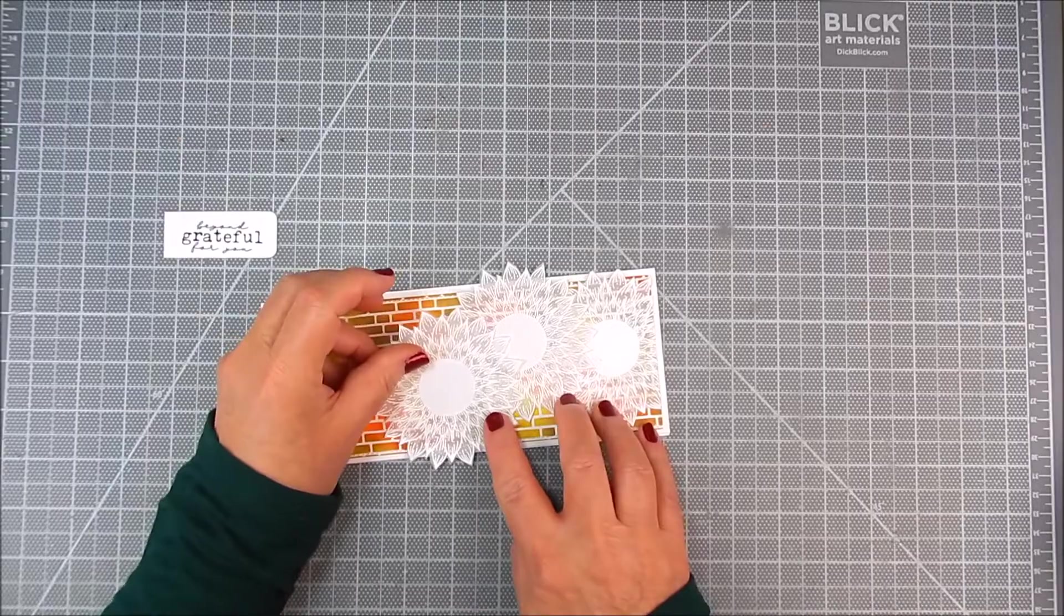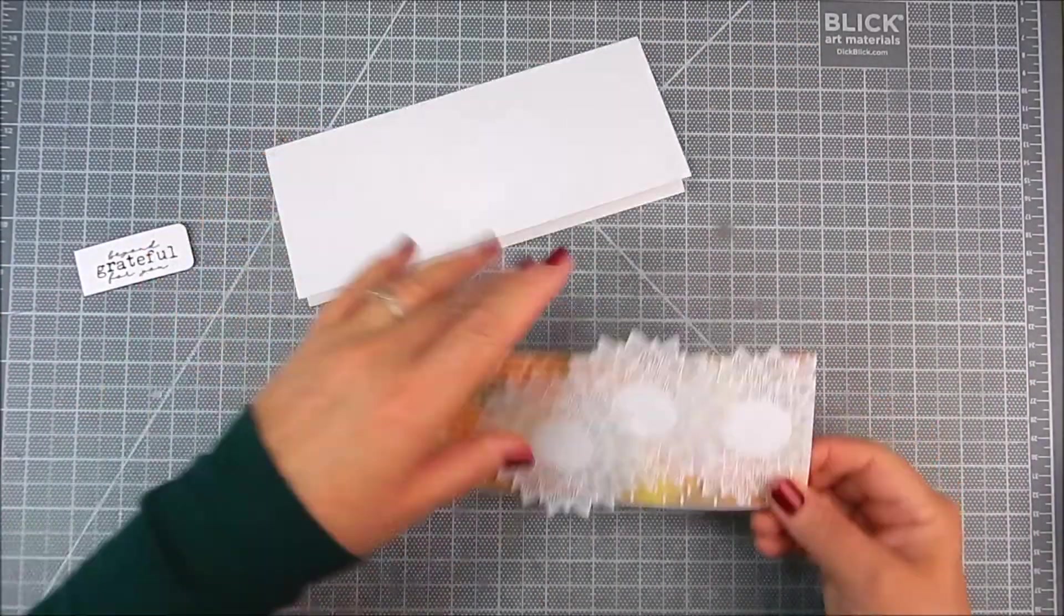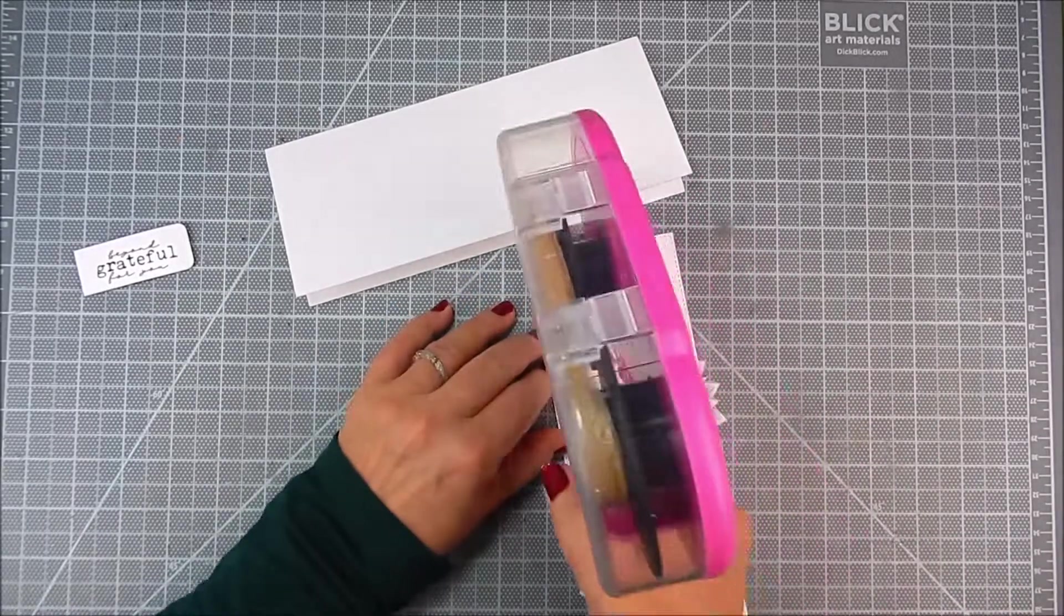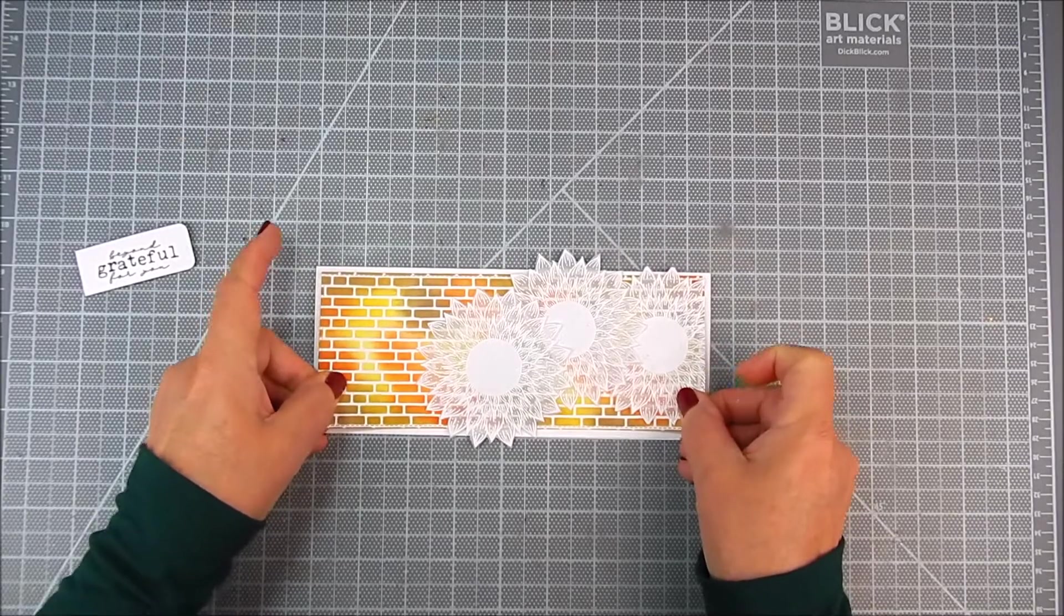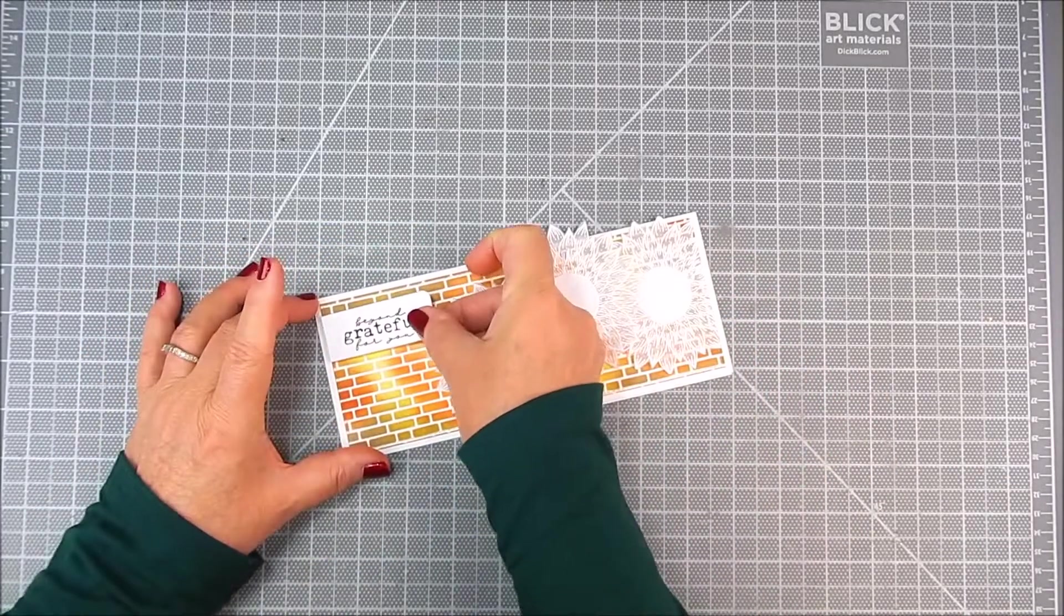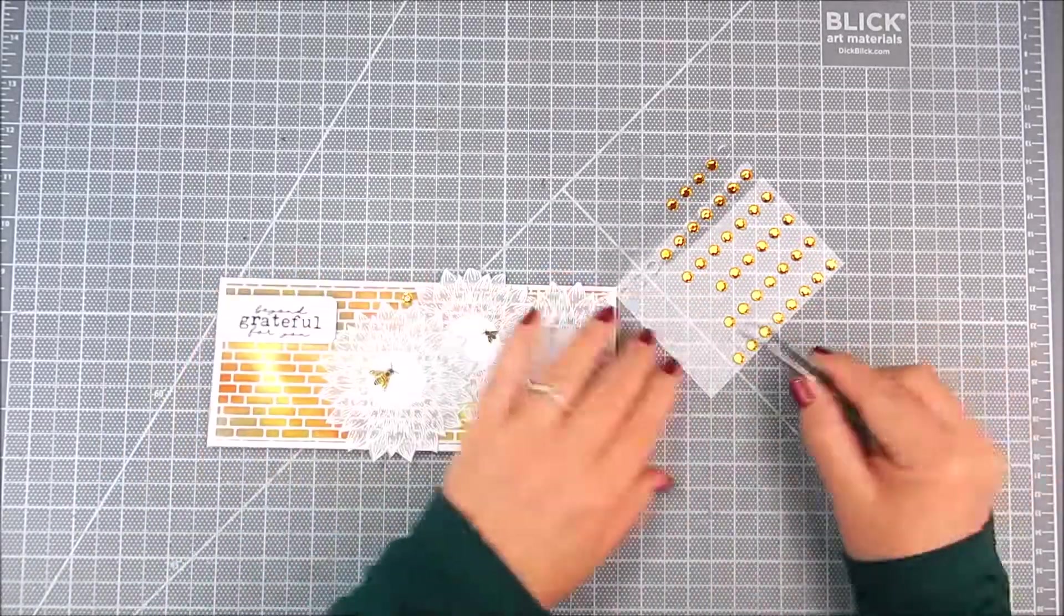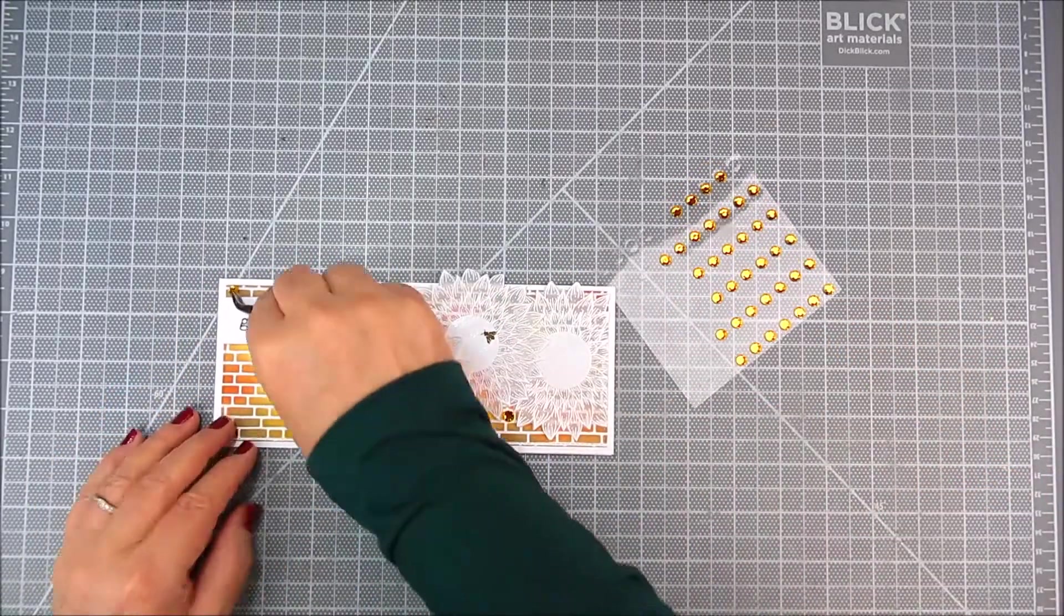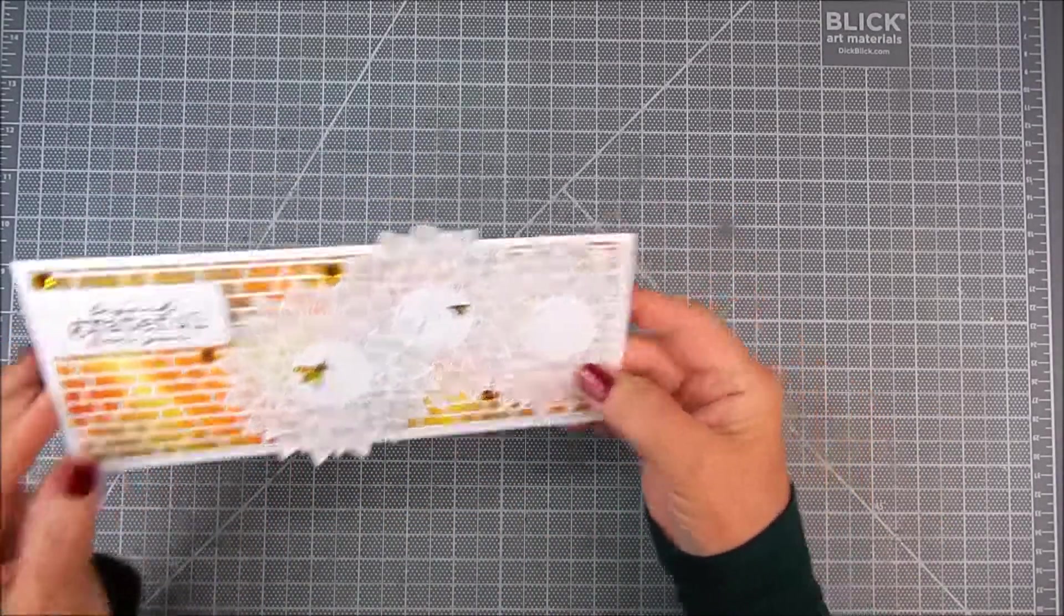I taped with flat double-sided tape all of this down onto the front top layer. I let some of those flowers overlap and I adhere with flat double-sided tape that top panel onto the card base. I use foam tape for the sentiment. I'm adding those little bees onto the sunflowers and I'm adding some adhesive gems just to make it sparkle so pretty.